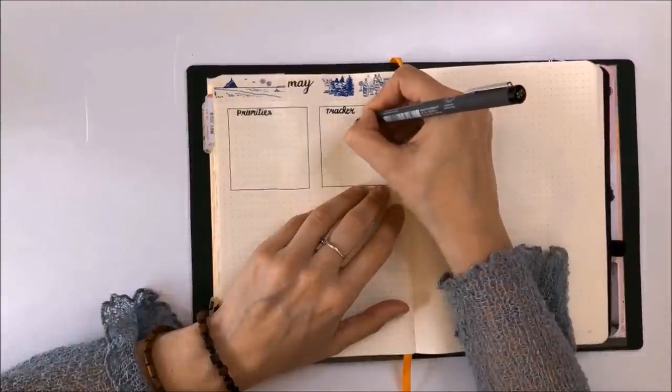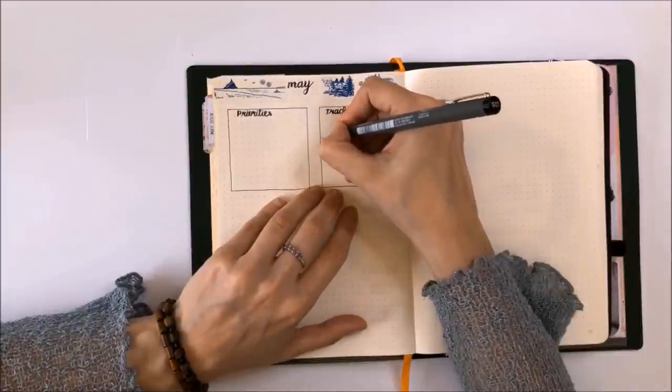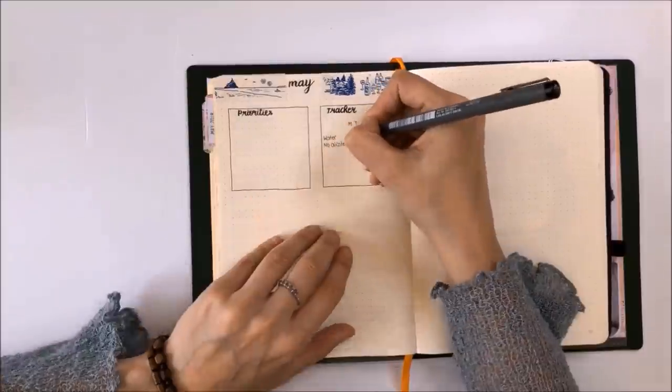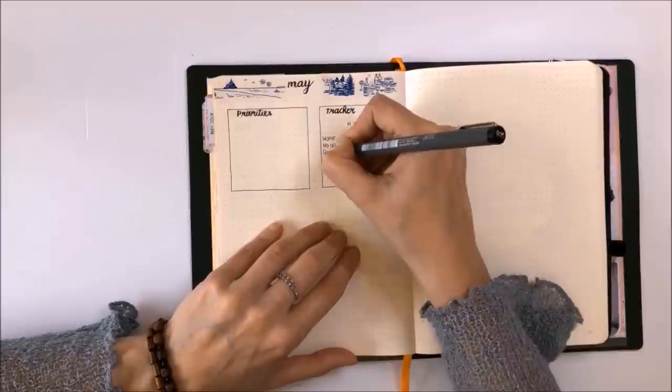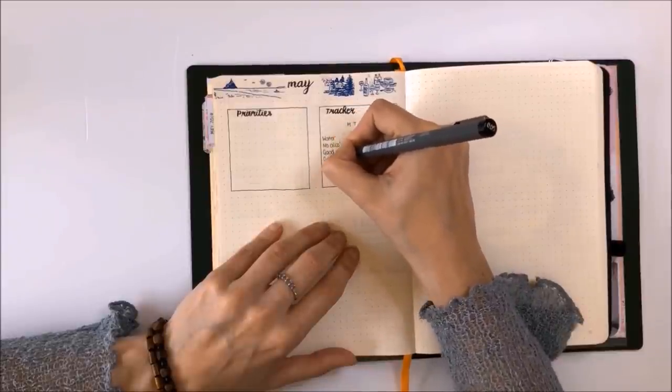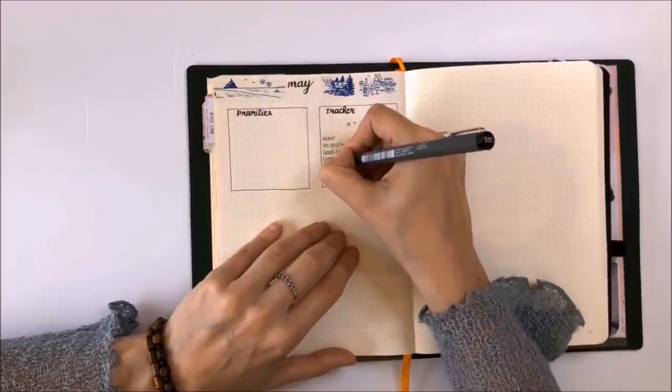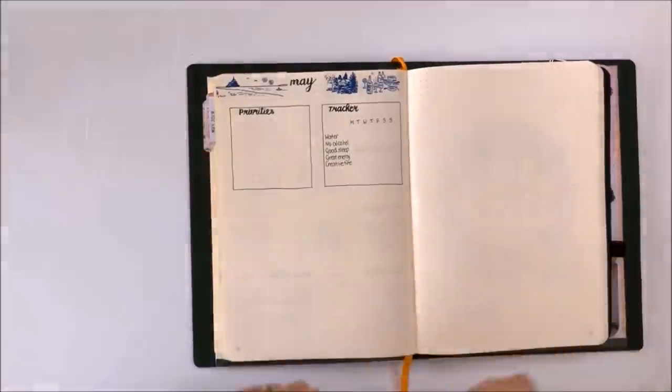I'm now writing the days of the week across the top, and I will write the things that I want to track down the left-hand side. The things I'm tracking at the moment are to make sure that I have enough water, no alcohol evenings, a good sleep, having good levels of energy, and spending some time doing creative projects.